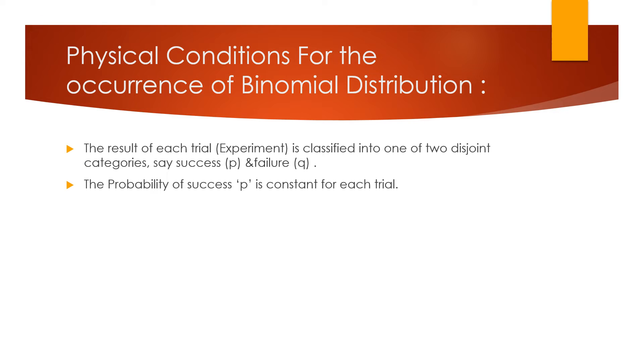Second condition is the probability of success p is constant for each trial. Third condition is the trials result independently. Fourth condition is the number of trials n is finite.